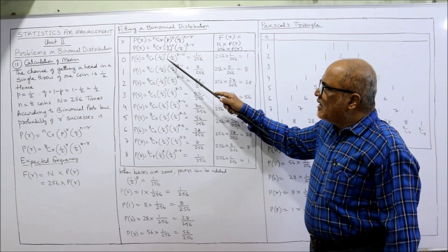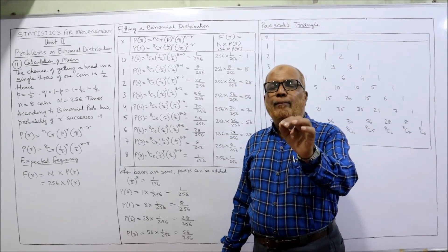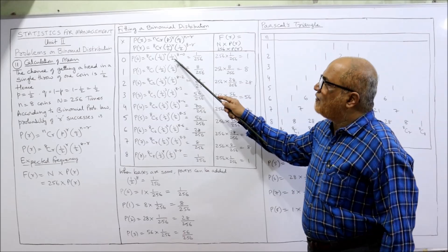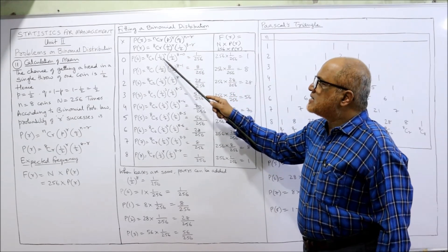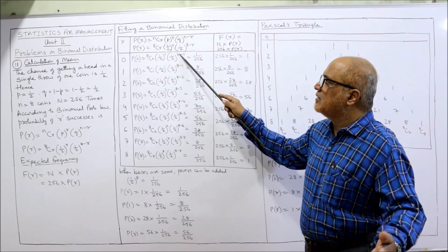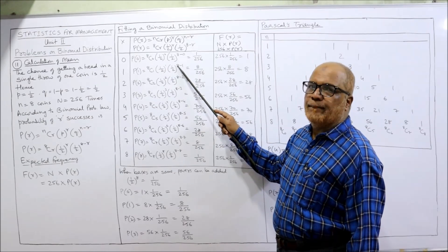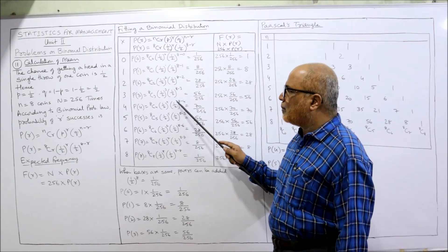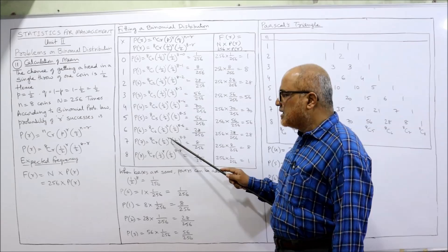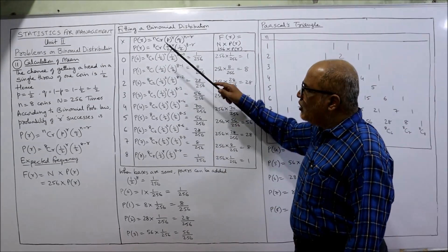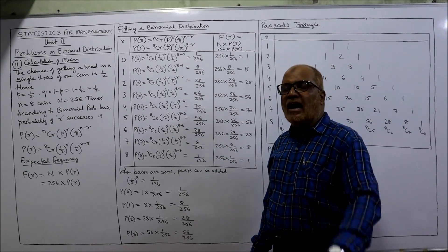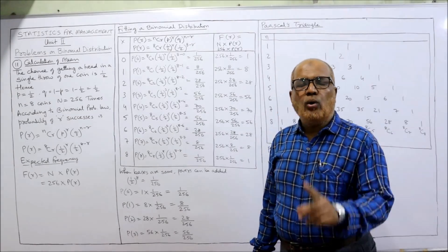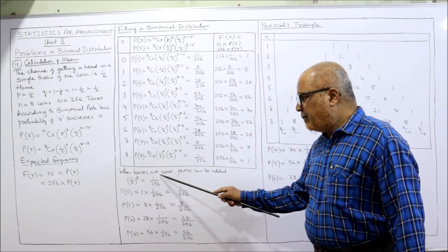Now observe that in each term, the bases are the same — both are 1/2. In mathematics, when bases are the same, powers can be added. So (1/2)^0 × (1/2)^8 = (1/2)^(0+8) = (1/2)^8. Similarly, (1/2)^1 × (1/2)^7 = (1/2)^8; (1/2)^2 × (1/2)^6 = (1/2)^8; and so on. In every case, the powers add up to 8. So we only need to calculate (1/2)^8 once, and it applies to all terms.